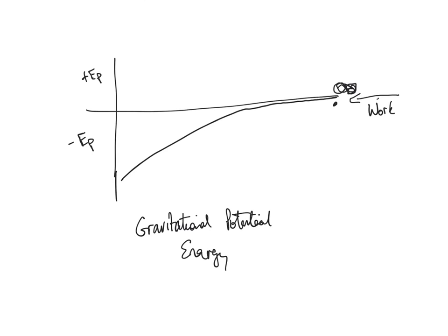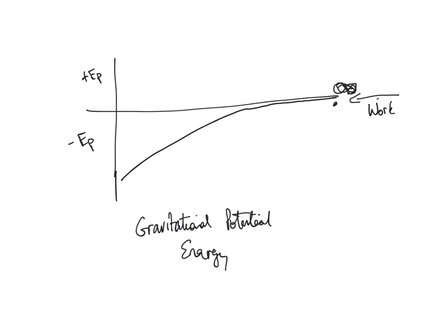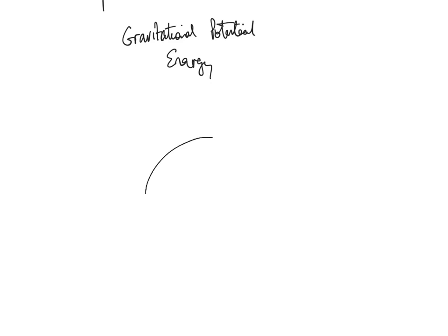So we can define zero gravitational potential energy as anywhere. So imagine it's at the surface of the Earth. We say if you move an object away from the surface of the Earth, you increase its gravitational potential energy. And it's zero at an infinite distance, so you're increasing it. So it's obviously negative because as it increases, it gets closer and closer to zero.